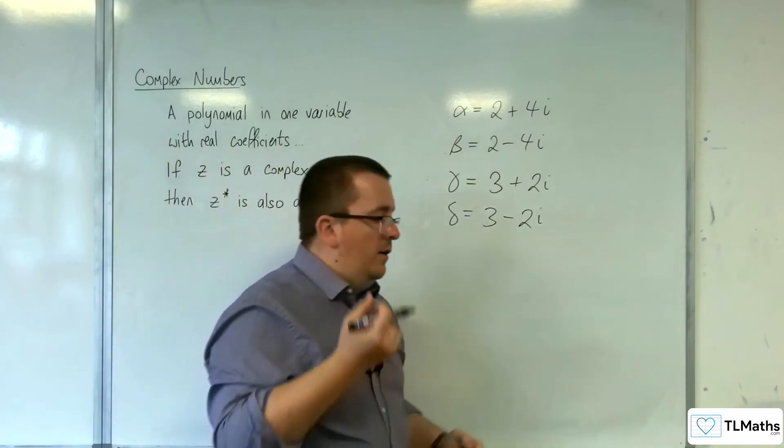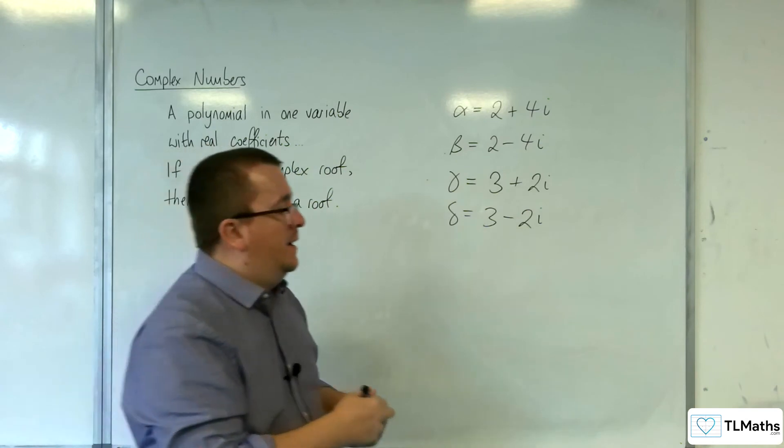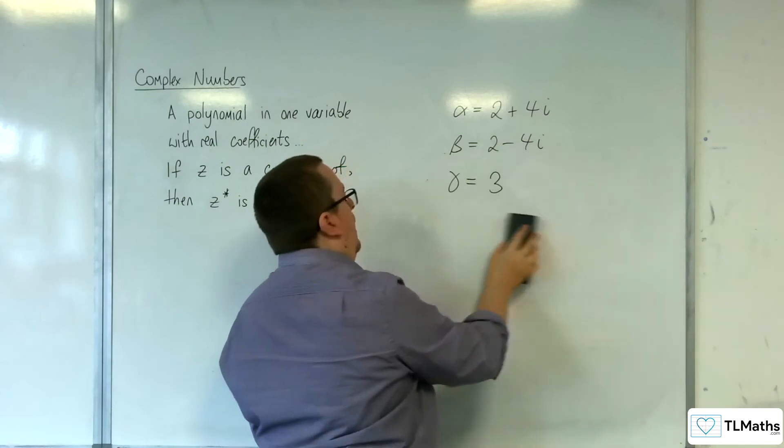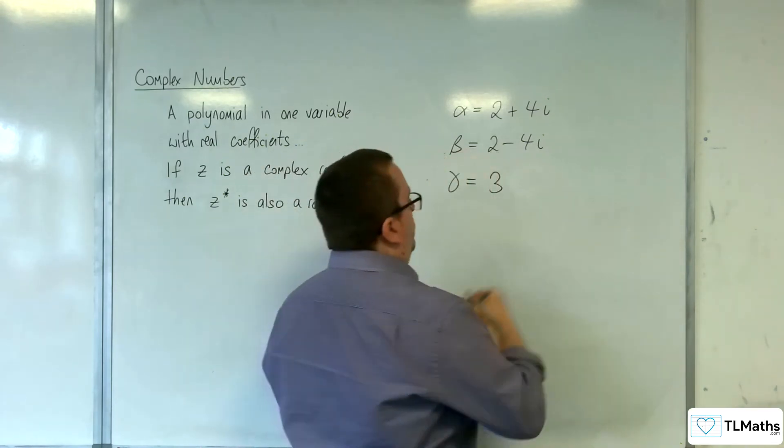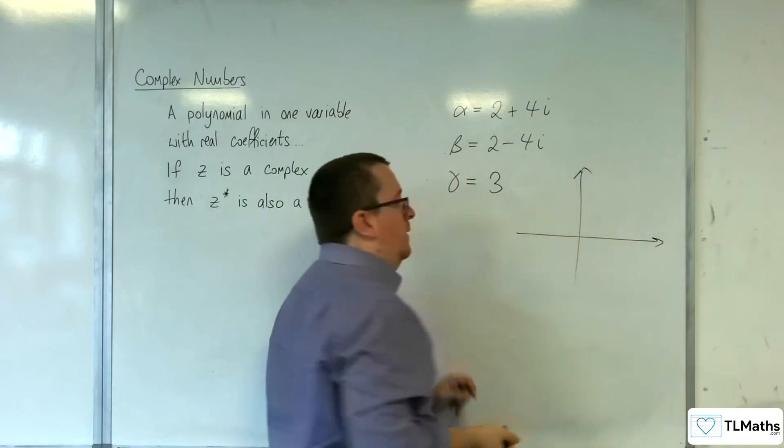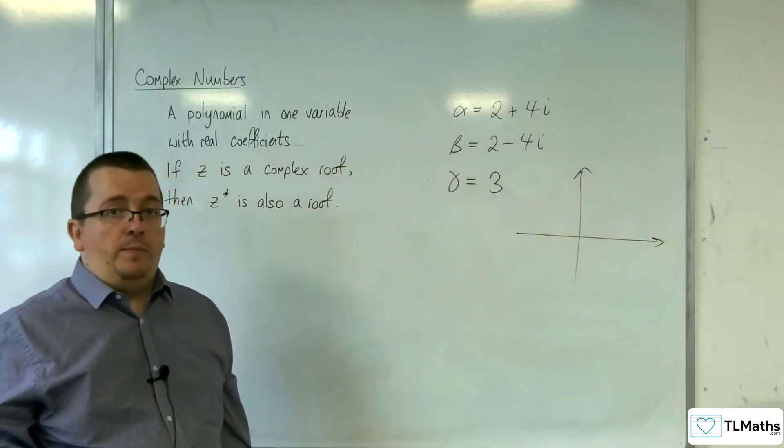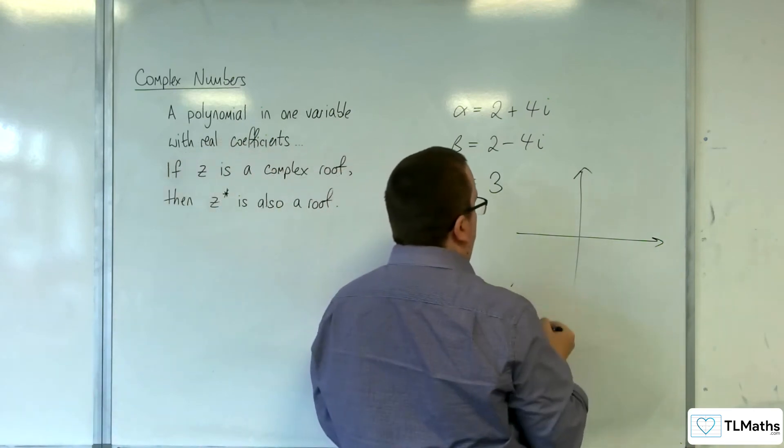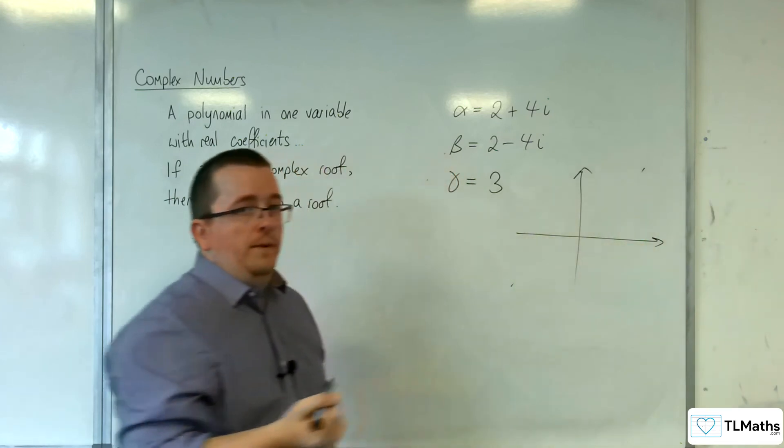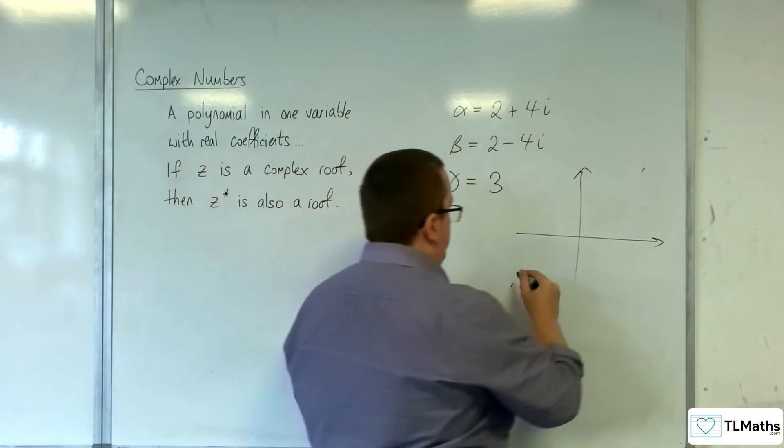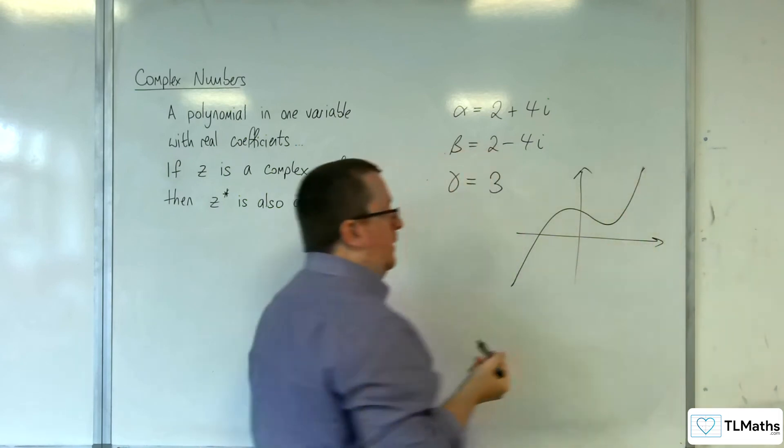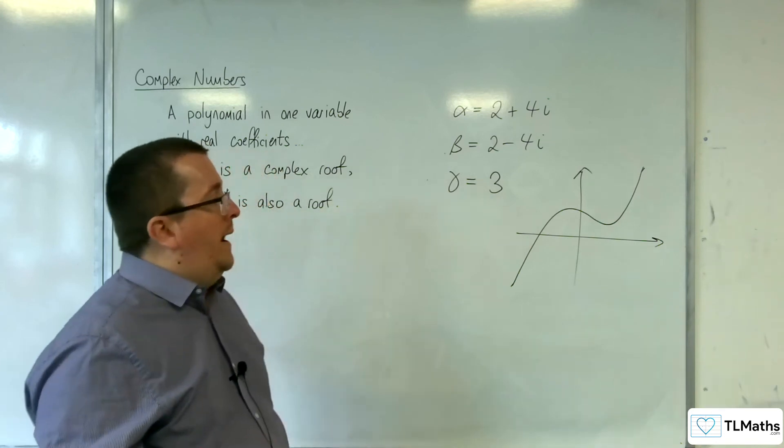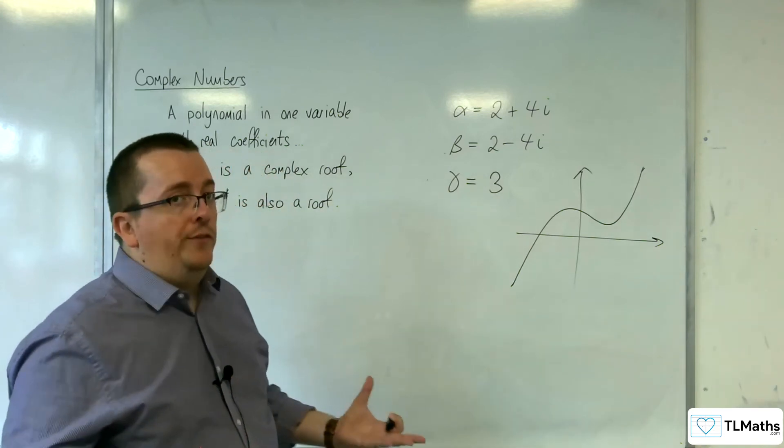Now, another practical reason as to why your cubic would have to have at least one real root is that when you draw a cubic, if it's a positive cubic, so x cubed rather than minus x cubed, it's got to start in the bottom left and work its way to the top right. So at some point it's got to cross the x-axis. So it will have to have a real root. There's no way that you can have your cubic and it not cross that x-axis.